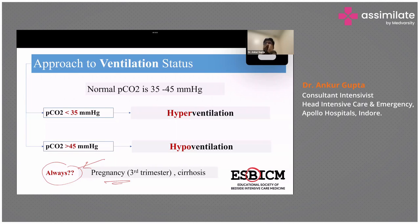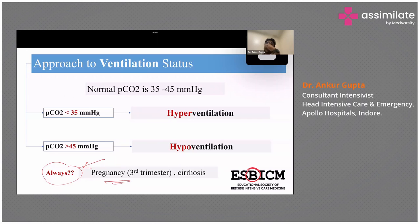So if a pregnant lady comes with a PCO2 of 30, that is fine because of the pushed diaphragm. But if the same pregnant lady comes with a PCO2 of 40 or 42, that means there is a problem — she is hypoventilating. So that you need to take care of.